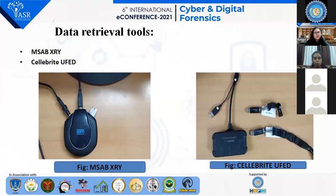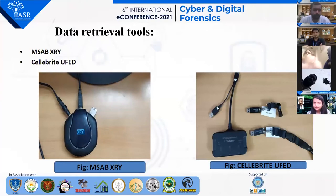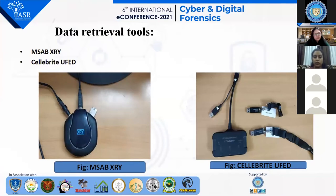These are the two tools we have used in our research work. The first figure is of MSAB XRY and the second one is of Cellebrite UFED. MSAB XRY is a commercial forensic tool made by the Swedish company MSAB. It provides extraction methods to analyze and recover data from smartphones, tablets, and GPS navigation.